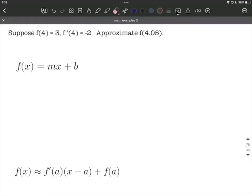On this problem, we're given a little bit of information about a function, and we're asked to approximate f(4.05). The information we're given is an ordered pair, f of 4, so 4 very close to our 4.05, and f prime of 4.